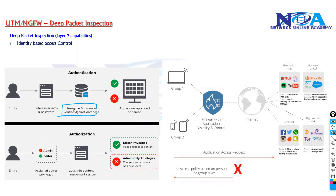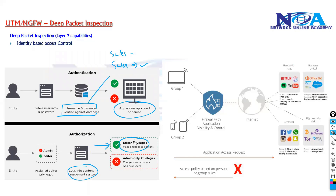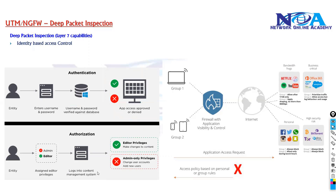With identity-based access control, you can provide access to specific applications or resources based on user accounts. For example, a sales manager can make changes while a sales representative can only access selected services. Depending on the user's role — such as editor or other user types — different permissions are defined. That is identity-based access control. The other feature supported is Application Visibility and Control, or AVC.